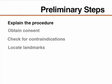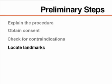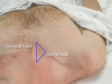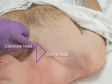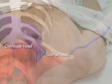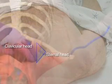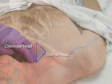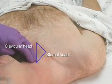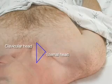After the procedure has been explained and consent obtained, review the records to confirm that there are no contraindications and examine the patient, concentrating on the regional landmarks. The internal jugular vein can be found at the apex of the triangle formed by the sternal and clavicular heads of the sternocleidomastoid muscle, just lateral to the carotid artery.